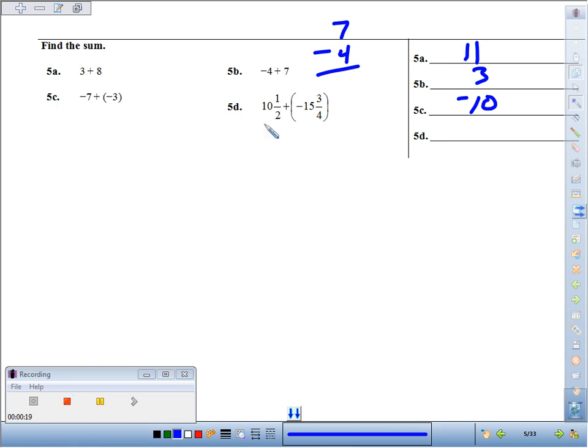And then in 5d, 10 and a half plus negative 15 and 3 fourths. So we're taught to just take the big number minus the small number.